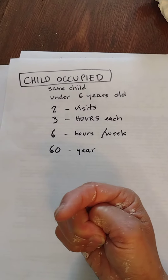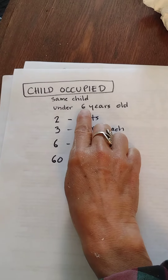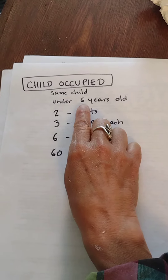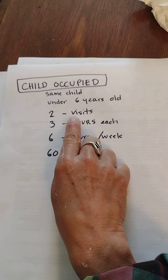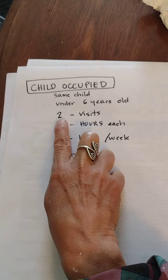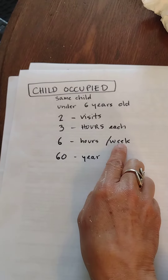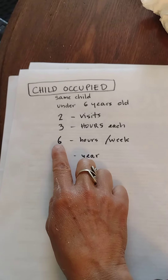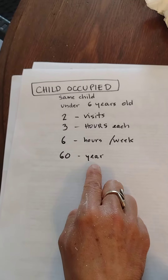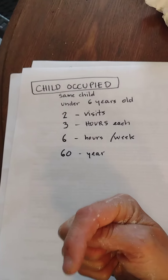So my house could be child occupied if David — he's the same child — is under six years old. If he comes to my house at Jarvis Street two times a week, and each visit he stays for three hours, that makes six hours every week. If David is at my house six hours every week, or 60 hours every year, then my house is child occupied. There's a child living in my house even though he doesn't live with me.